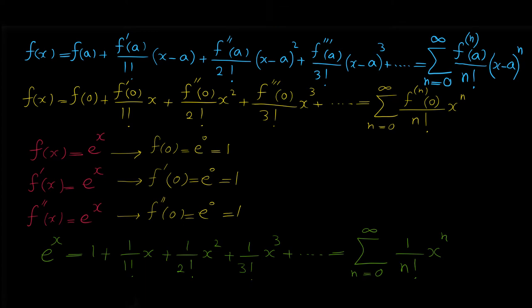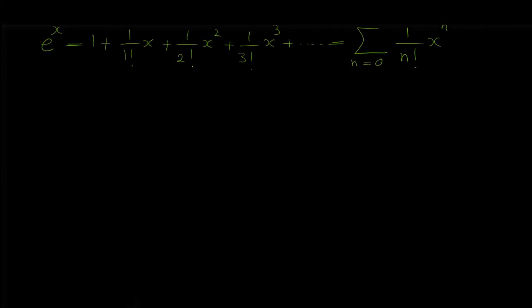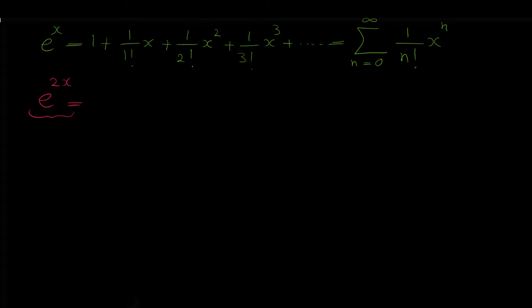Now we want to use the Maclaurin series of e to the x to find the Maclaurin series of other functions. First we want to find the Maclaurin series of e to the power of 2x. We can find it in two methods: one way is to use the Maclaurin series formula again and find all the derivatives, but the easier way is to use the Maclaurin series of e to the x.